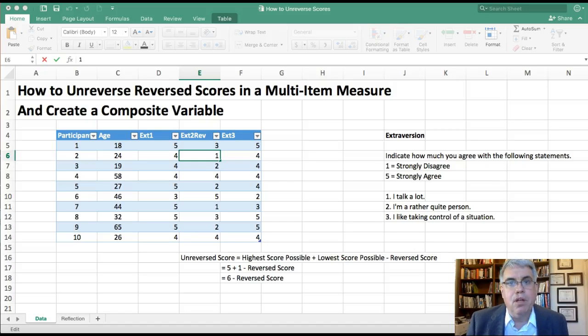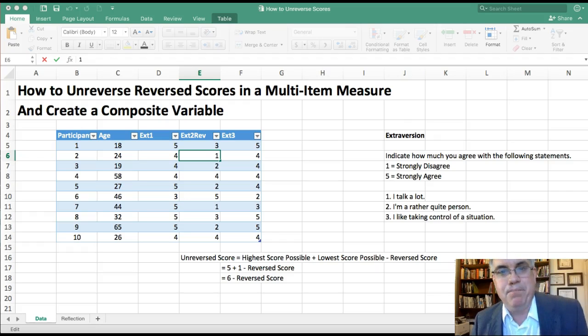In this example, we're going to look at how to unreverse reversed scores in a multi-item measure and then we're going to create a composite variable from the different data that we have. Now, in this example, let's suppose that we're studying the relationship between age and extroversion. Does extroversion change as people get older? I'll give you a hint, actually it does. People get a little less extroverted as they get older, but let's just look at the data that we have here.